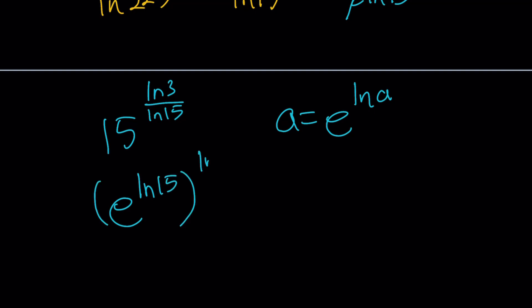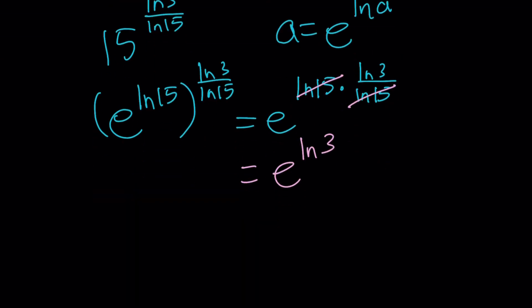I can write 15 as e to the power ln 15, then raise it to the power ln 3 over ln 15. The powers will be multiplied, and they're going to cancel out. Awesome. ln 15 is going to go away, and we end up with e to the power ln 3, which happens to be 3 in the simplest form.